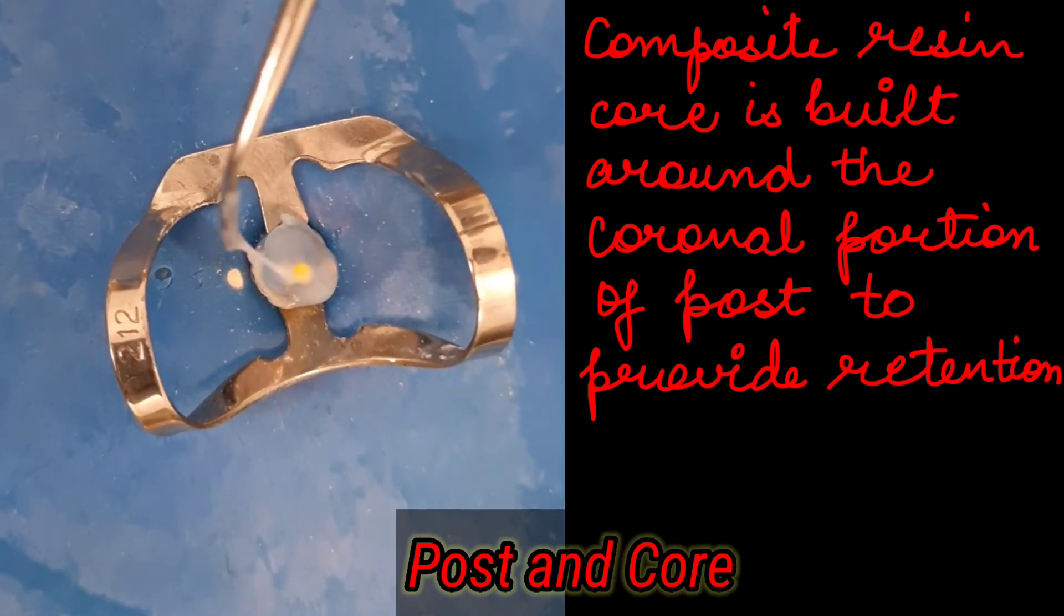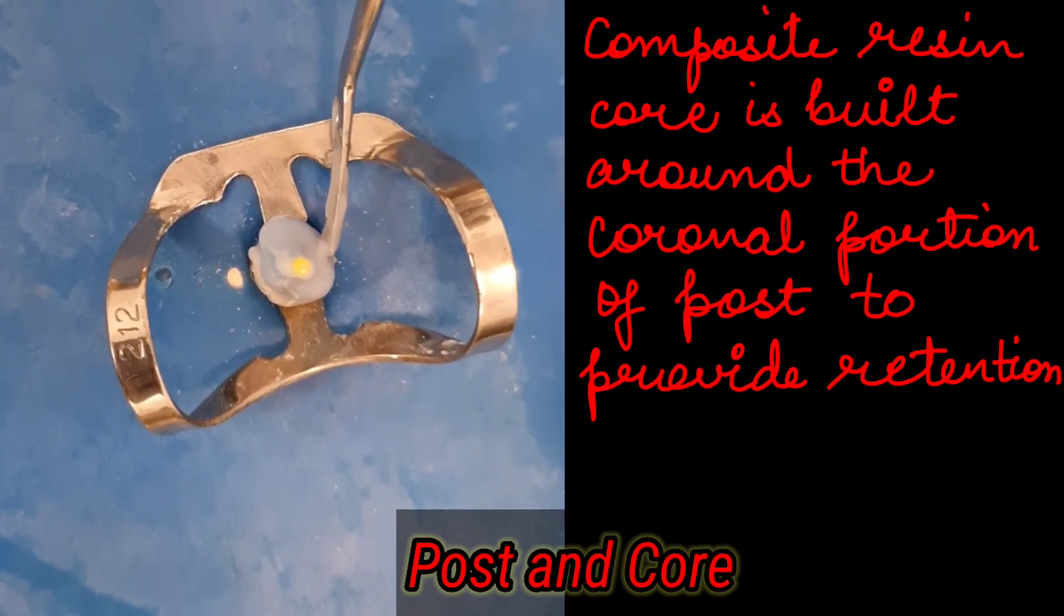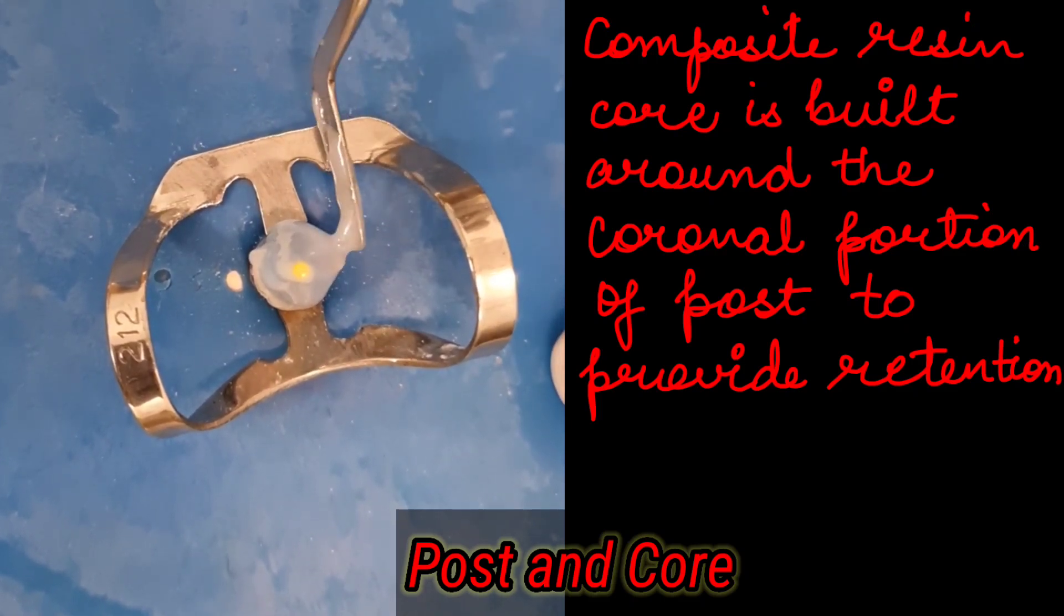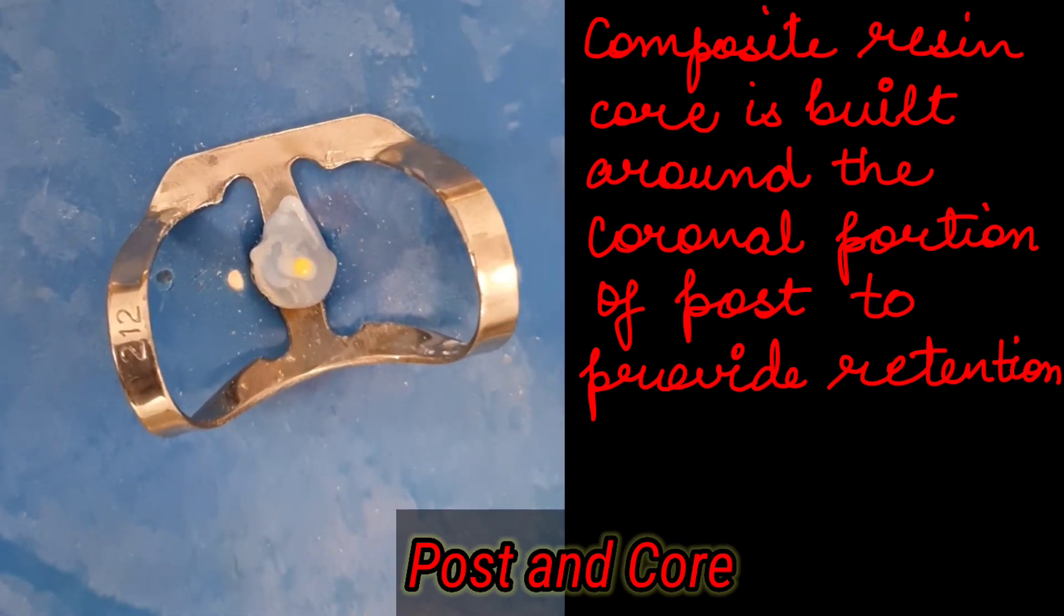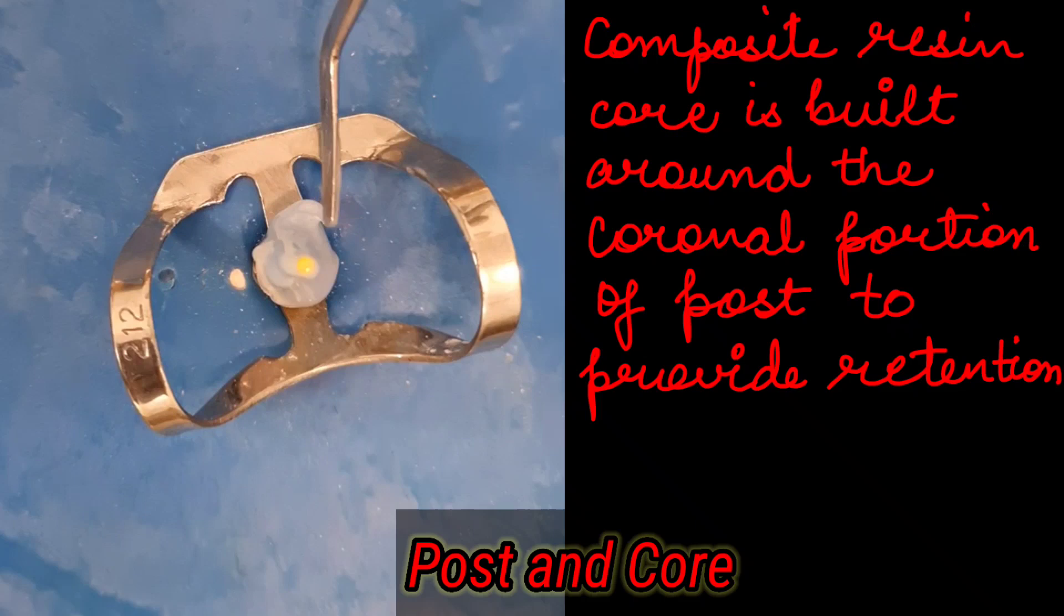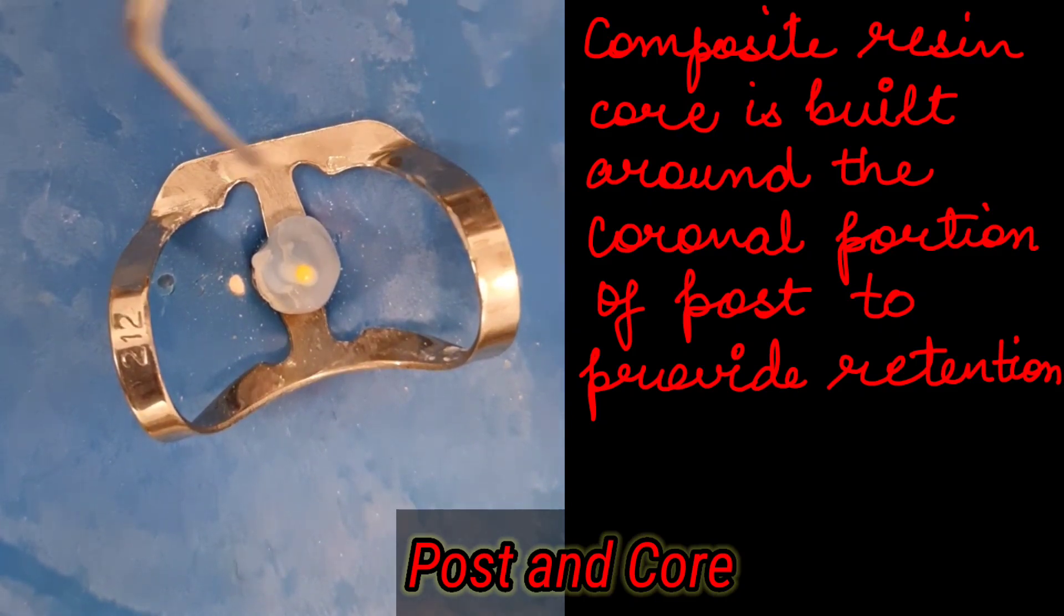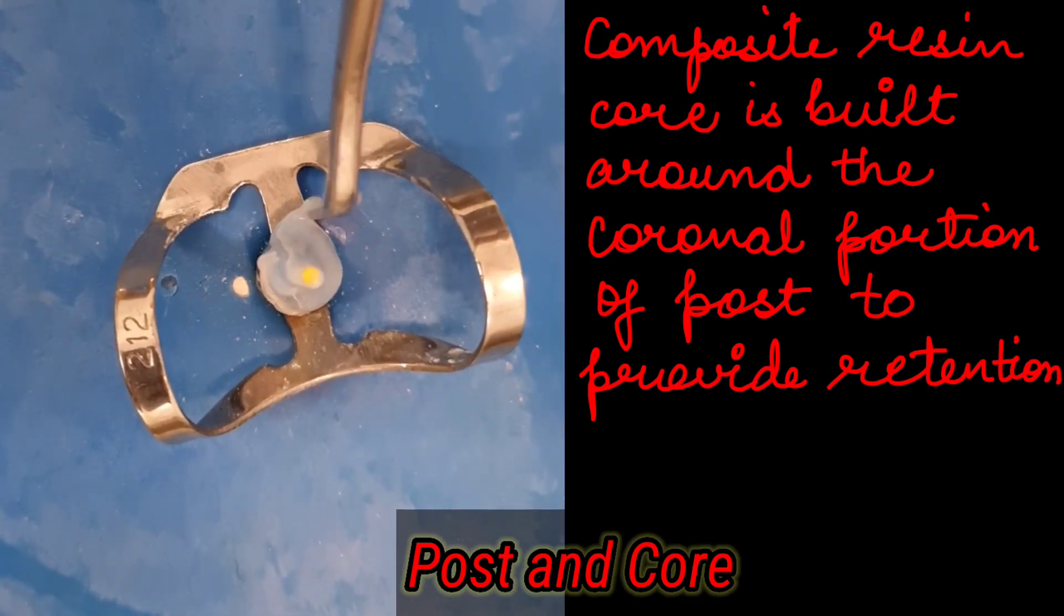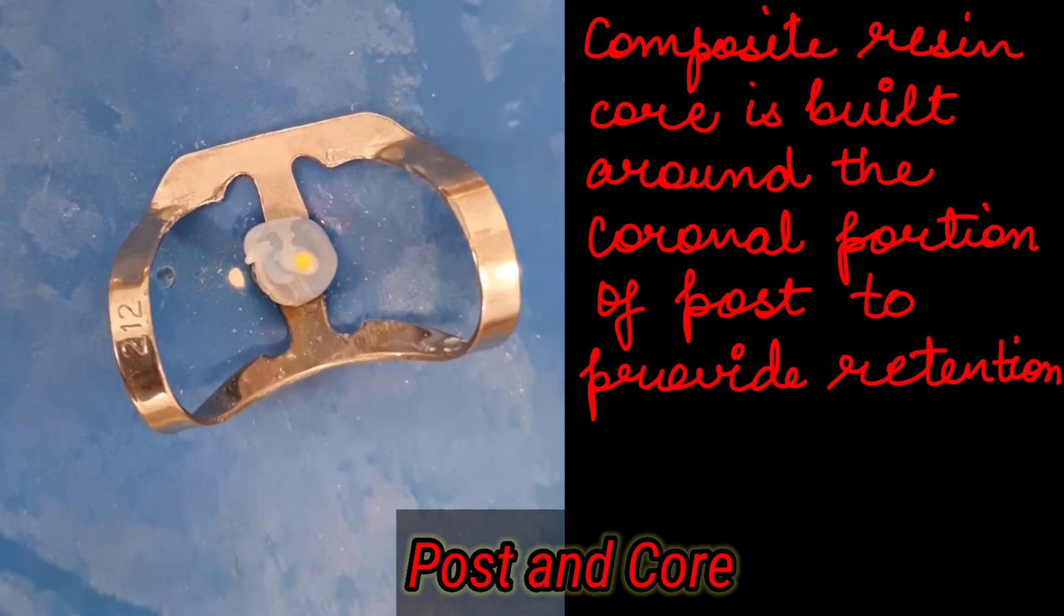The first thing in mind when you are placing a post and core is you shouldn't damage or weaken the tooth structure because otherwise there will be increased risk of fractures. Then we select the size of the post and the diameter shouldn't be more than one-third of the diameter of the root. Then you check for the length—that is two-thirds of the length of the root—so one-third at least gutta-percha should be kept apically and there should be adequate endodontic seal also.